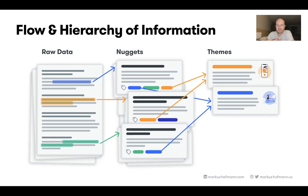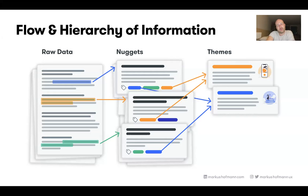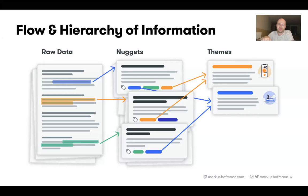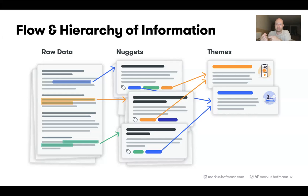On this slide, there's actually one thing missing from what I described before — the research report at the end. What we have here are the essential elements: raw data, the raw data split up into nuggets, and then the learnings or themes. I use 'themes' and 'insights' interchangeably — they're always the end results, the common patterns you find. The research report is actually not inherently required in this whole structure.